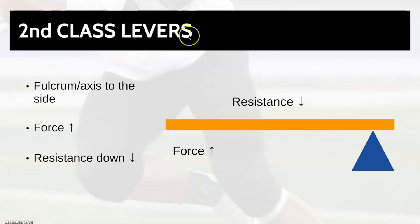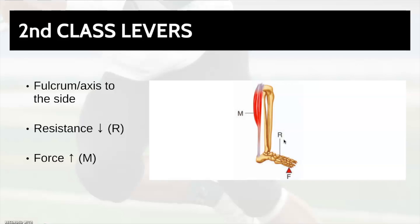Let's move on to second class levers. This time you'll notice the fulcrum is right over to one side. We've got our force on the opposite side, pushing or pulling up, and the resistance is in the middle of the bar pulling or pushing down. Within the body, you can visualise it here. We have the fulcrum down on the toes — that's where we pivot from. We have the resistance or the weight in the middle of the foot pushing down. And then we have the force going up here. So when the calf contracts, the resistance will be pulled up, pivoting around the fulcrum.